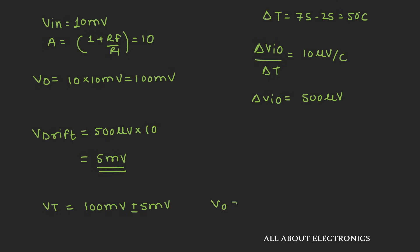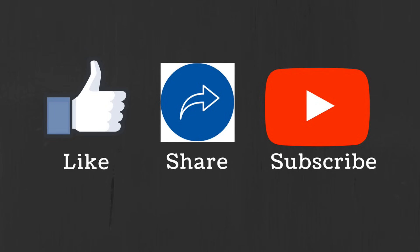So the output voltage can be either 95 mV or 105 mV. When this circuit is operated at 75°C, there is a 5% error in the output voltage. This error can be minimized either by using an op-amp with very low input offset drift, or by maintaining the ambient temperature. I hope you understood what is input offset voltage and how it can affect the output of your op-amp. In the next video, we will see more parameters related to DC offset: input offset current and input bias current. If you have any questions, let me know in the comments. If you liked this video, hit the like button and subscribe to the channel.